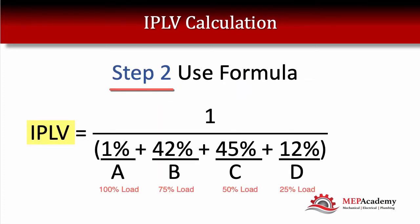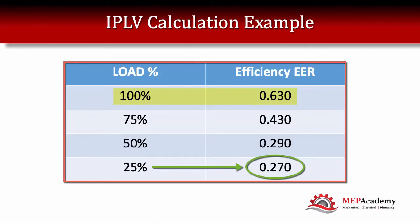Step two is to insert your values into the formula. We need a sample of what the EER is for a particular chiller. For this water-cooled chiller example: at 100% load the EER is 0.63; at 75% load it has a better EER of 0.43; at 50% load it's 0.29; and at 25% load it's 0.27. Take these numbers and put them into the calculation to get the IPLV.